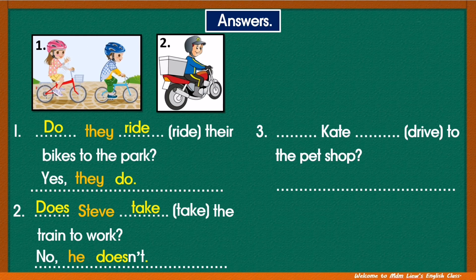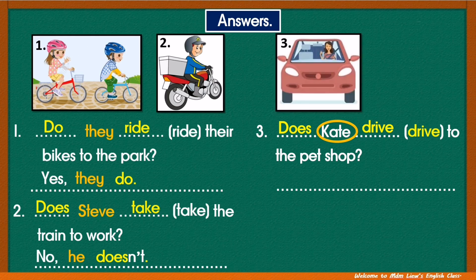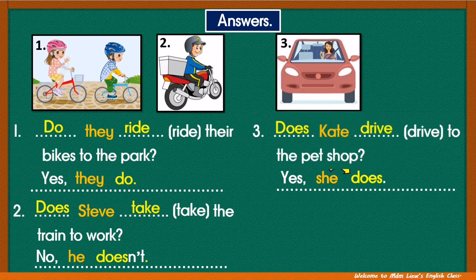Number three: look at the subject — Cat. Is it singular or plural? Singular. For singular subject, we need to use does, and the verb in the base form: drive. Does Cat drive to the pet shop? Looking at the picture — yes, right? Instead of Cat, we can also use she. Yes, she does. Question: Does Cat drive to the pet shop? Answer: Yes, she does.